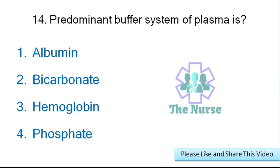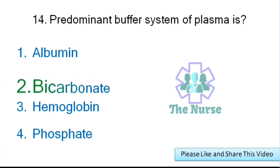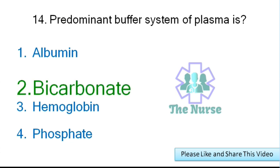Next question: What is the predominant buffer system of plasma? Options: albumin, bicarbonate, hemoglobin, or phosphate. Correct answer: bicarbonate.